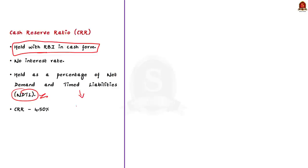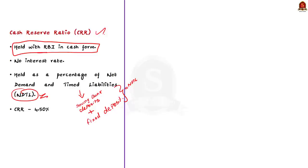Time liabilities are those which are not payable on demand — this includes fixed deposits, cash certificates, etc. The sum of demand liabilities and time liabilities is the NDTL. The percentage of the NDTL held by banks with RBI in cash form is called CRR, that is cash reserve ratio. Note that RBI does not pay any interest to the banks for maintaining CRR. According to the news article, RBI is planning to raise the CRR by 50 basis points — currently 4%, to be increased to 4.5% on 21st of May.